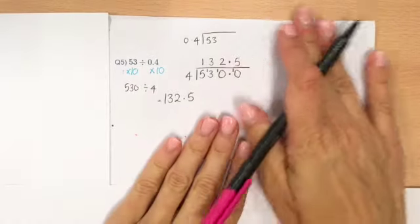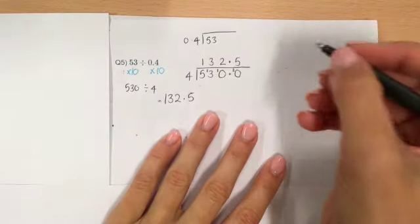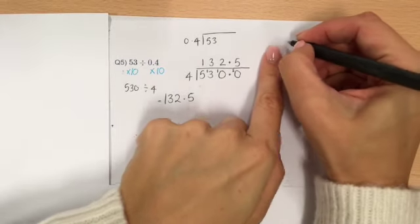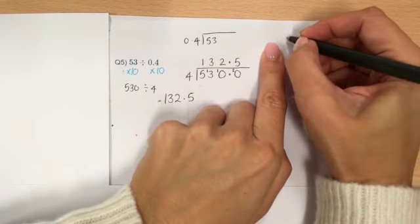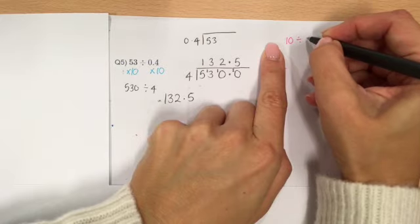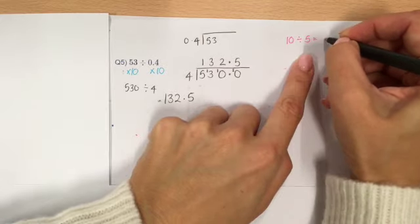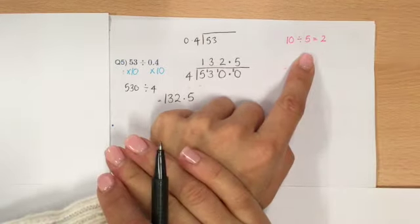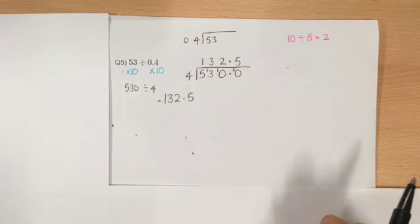Now, this is something that I always show my classes when I'm teaching dividing decimals. But if I've got, let's do 10 divided by 5 is 2. Nice and straightforward. There are two 5s in 10.